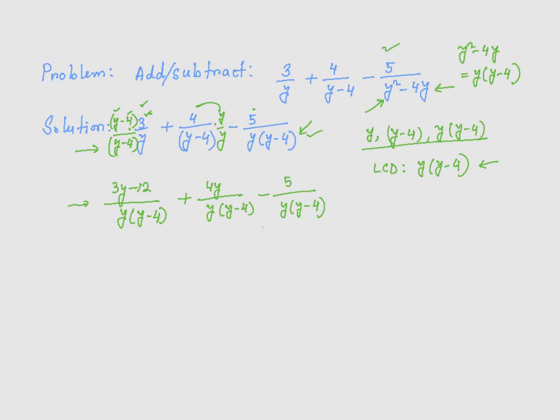Now I have three terms here, all of them have the same denominator. I can just combine them. It's going to be equal to (3y minus 12 plus 4y minus 5) divided by y times (y minus 4), which is going to be equal to 7y (that's 3y plus 4y), and negative 12 minus 5 is negative 17, divided by y times (y minus 4).